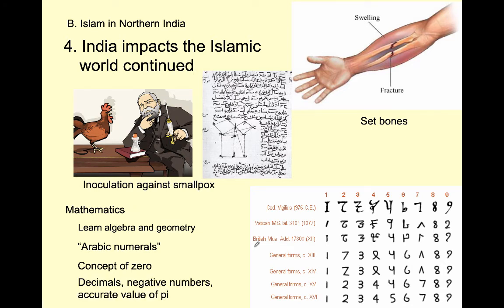It goes even further: Indian mathematicians developed fractions, decimals, and even negative numbers, and calculated the value of pi along with the Greeks. All of this knowledge spread across the Islamic world from India westward.